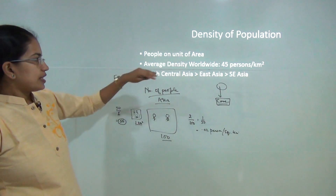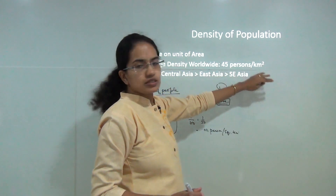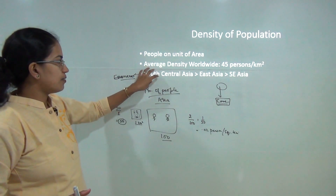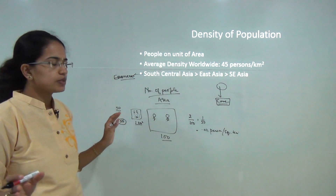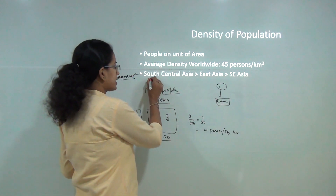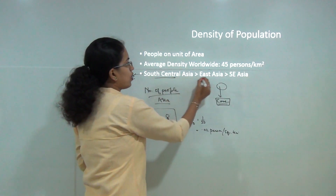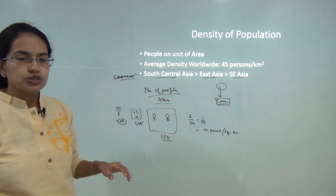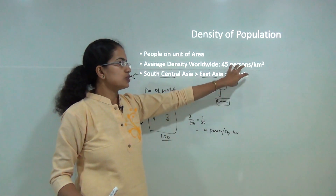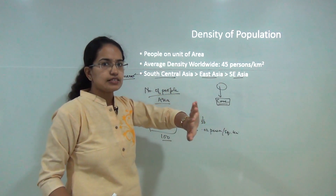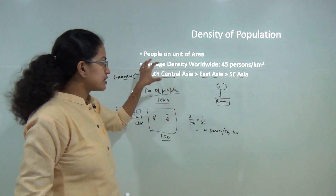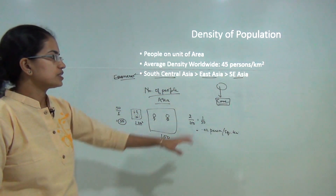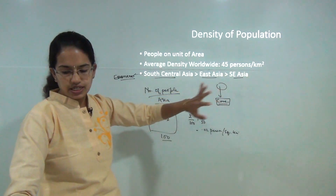The average density worldwide is 45 persons per square kilometer. Among the major areas of population concentration, you have the highest concentration in South Central Asia, followed by East Asia, followed by Southeast Asia. Most students get confused here — Southeast Asia is not the most densely populated region. South Central Asia is much denser compared to Southeast Asia, which includes countries like Malaysia and Thailand.